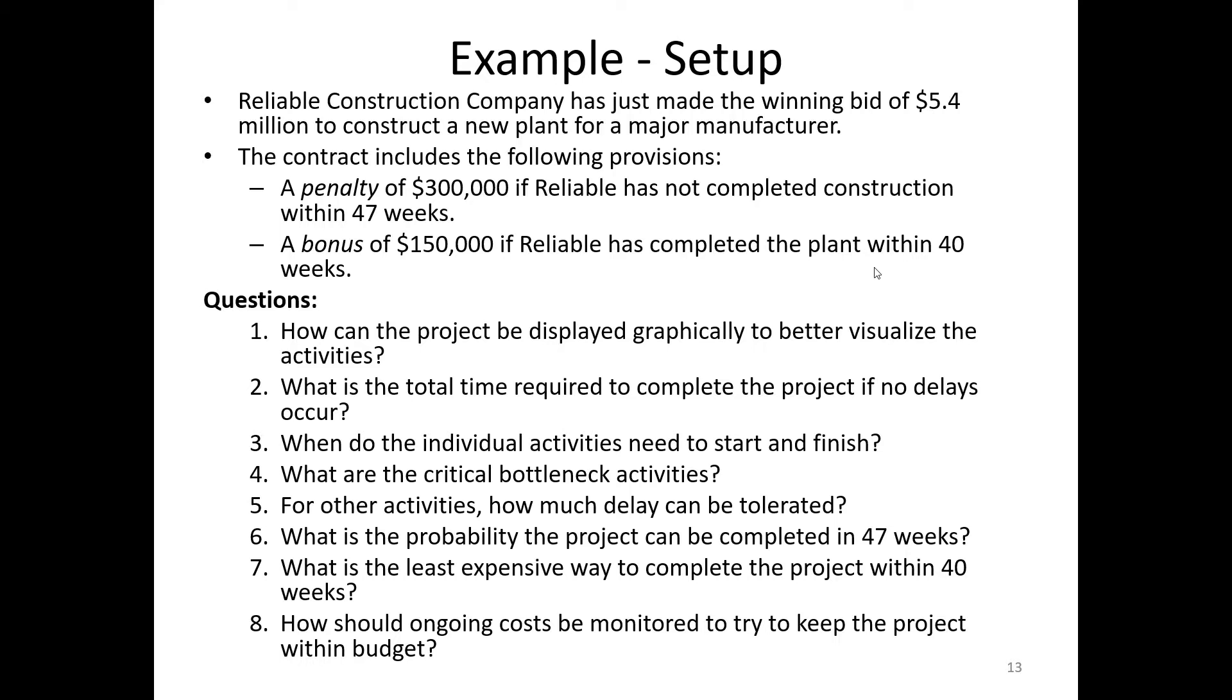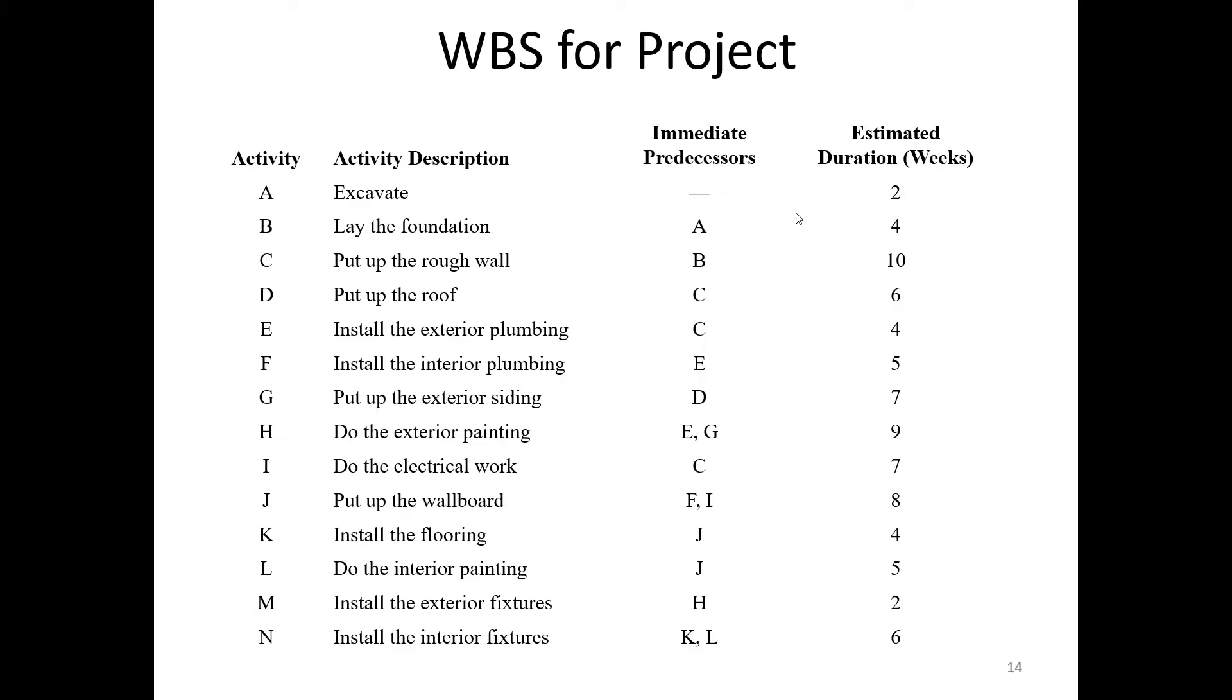So we have two issues here. First step in this process is to determine how long this project is going to take. We want to make sure that it falls within the 47 weeks. But we would really like it if we can do it within 40 weeks so that we both get the $150,000 bonus and reduce the probability that we would face this $300,000 penalty. So let us begin.